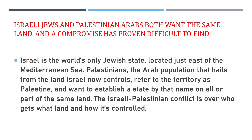Jews were facing atrocities in Europe. Zionism felt the only way of ensuring security was if Jews had a country of their own. Jews sought a home in the Middle East, and in the first decade of the 20th century, tens of thousands of Europeans migrated to the Middle East.